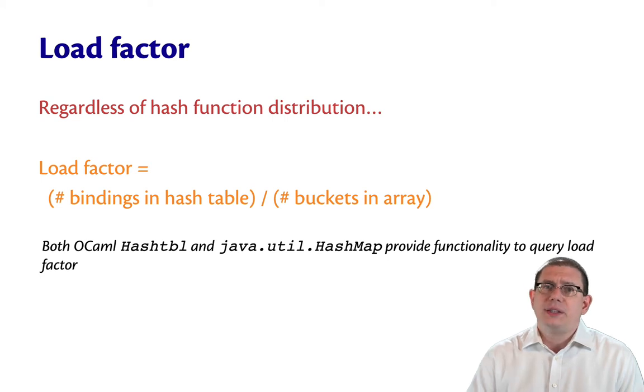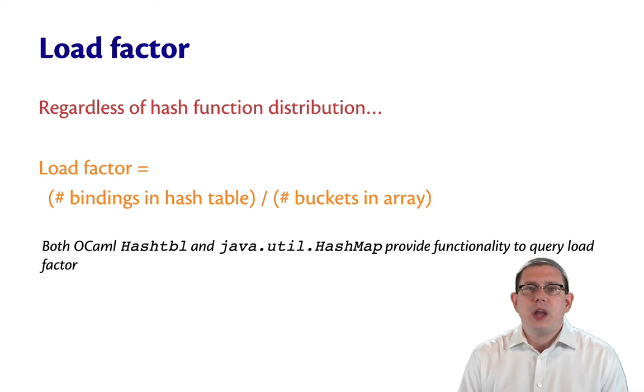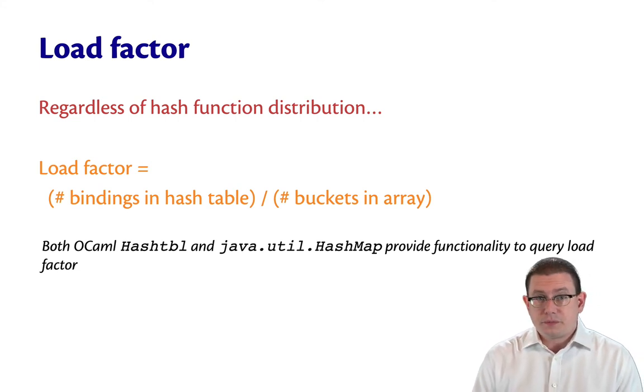No matter what the distribution is of keys through the buckets by the hash function, there's another quantity that's of interest. And that's called the load factor. It's what we were investigating just on the previous slide. The load factor is the number of bindings over the number of buckets. The load factor effectively tells you how well the hash function is doing its job of distributing keys randomly.